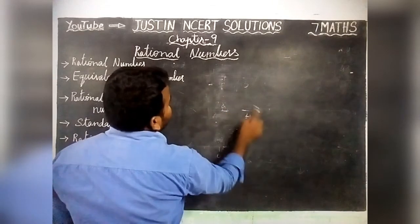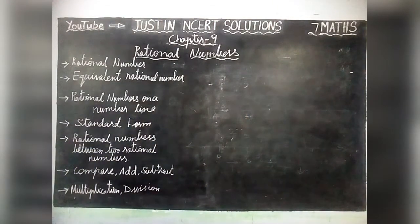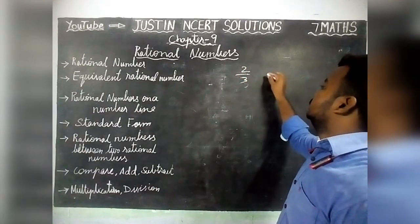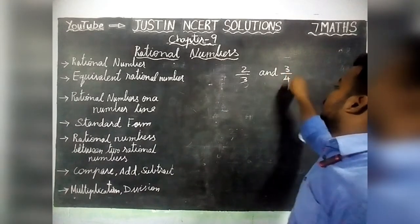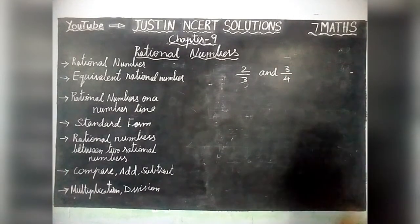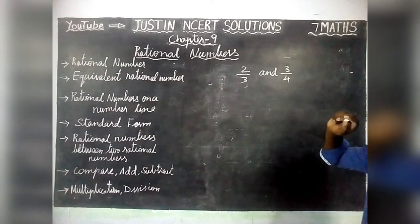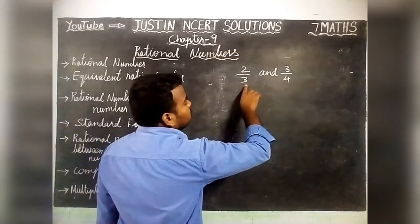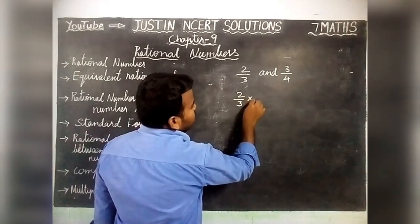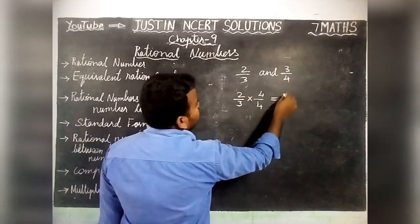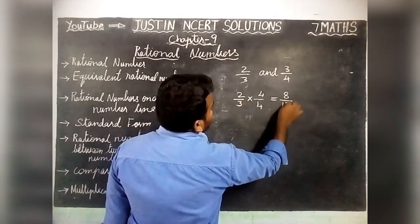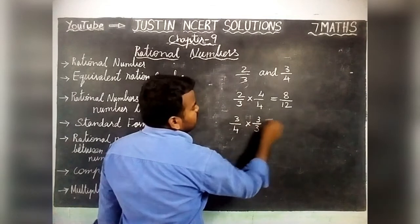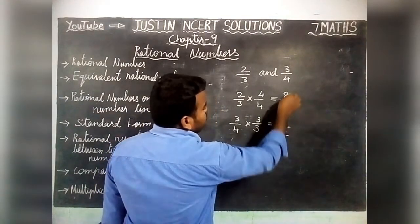Next, Rational Numbers between two Rational Numbers. We are going to find 3 rational numbers between 2 by 3 and 3 by 4. The denominators are different, so first we convert them to a common denominator. 2 by 3 multiplied by 4 by 4 equals 8 by 12. And 3 by 4 multiplied by 3 by 3 equals 9 by 12. Both now have a common denominator of 12.